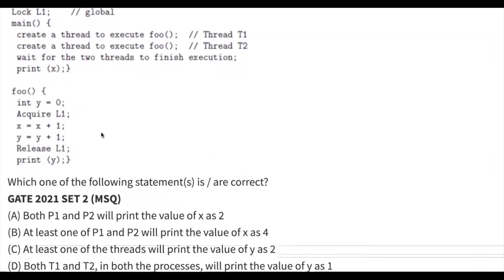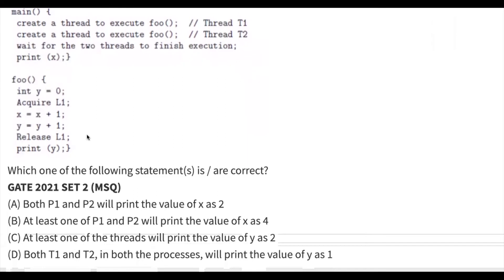The options given are: Option A - both P1 and P2 will print the value of x as 2. Option B - at least one of P1 and P2 will print the value of x as 4. Option C - at least one of the threads will print the value of y as 2. Option D - both T1 and T2 in both the processes will print the value of y as 1. Basically they are asking what are the possible values of x and y.